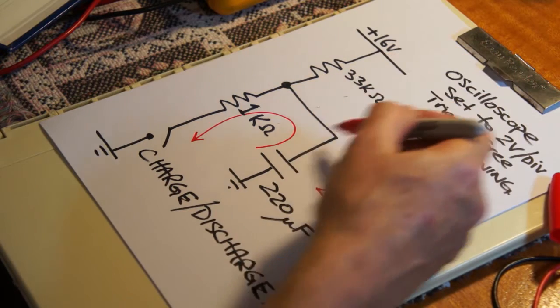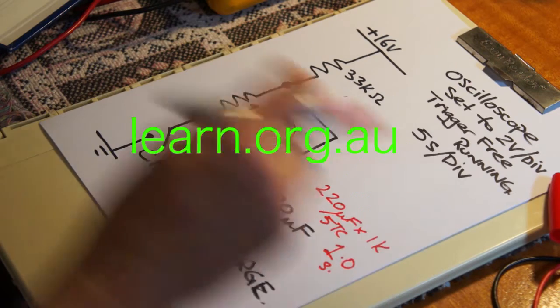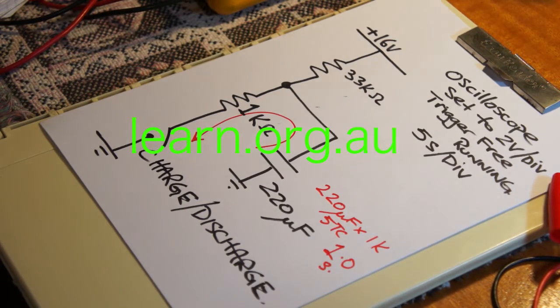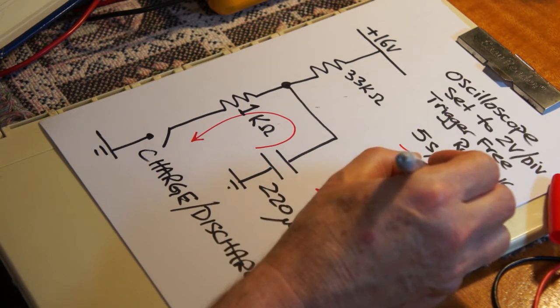We've got 33k ohms times 220 microfarads. And that's going to be around about 7.3, I think it was, 7.3 seconds per time constant.